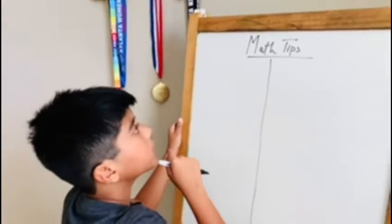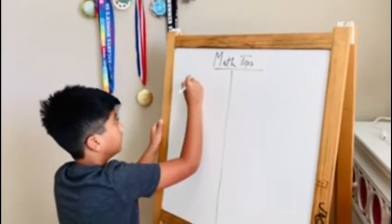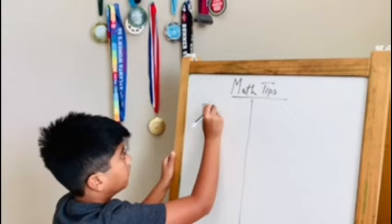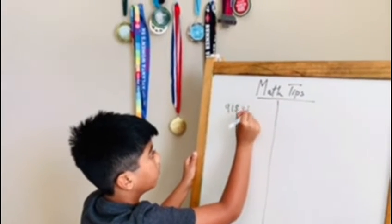Our three-digit number could be... sorry, 918. So 918 times 11.